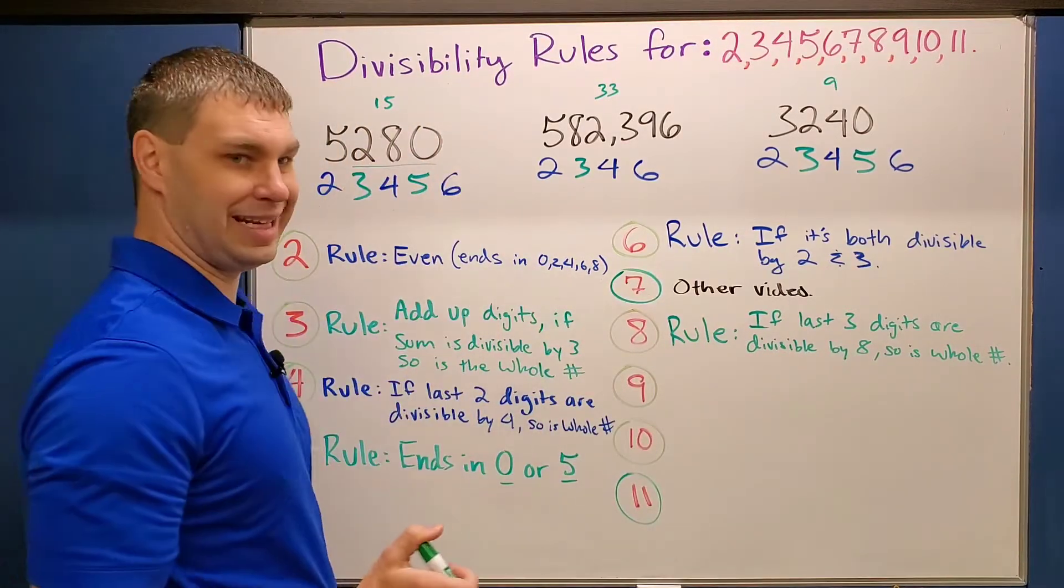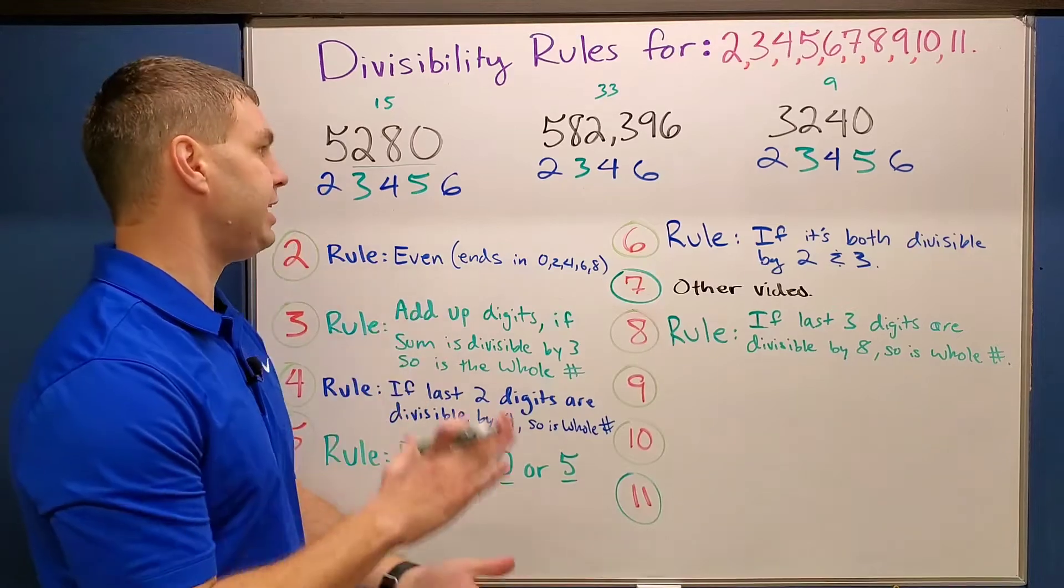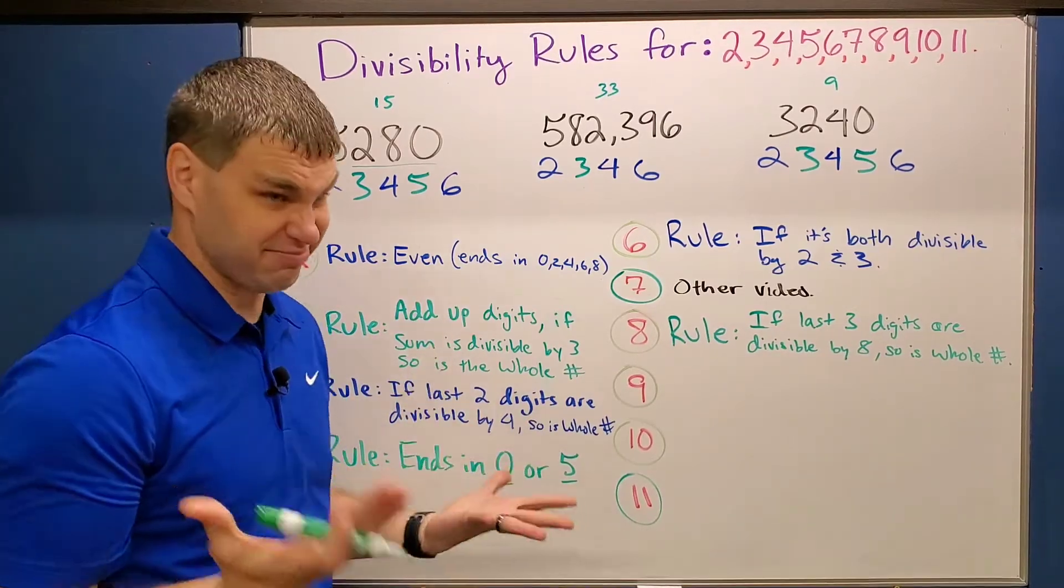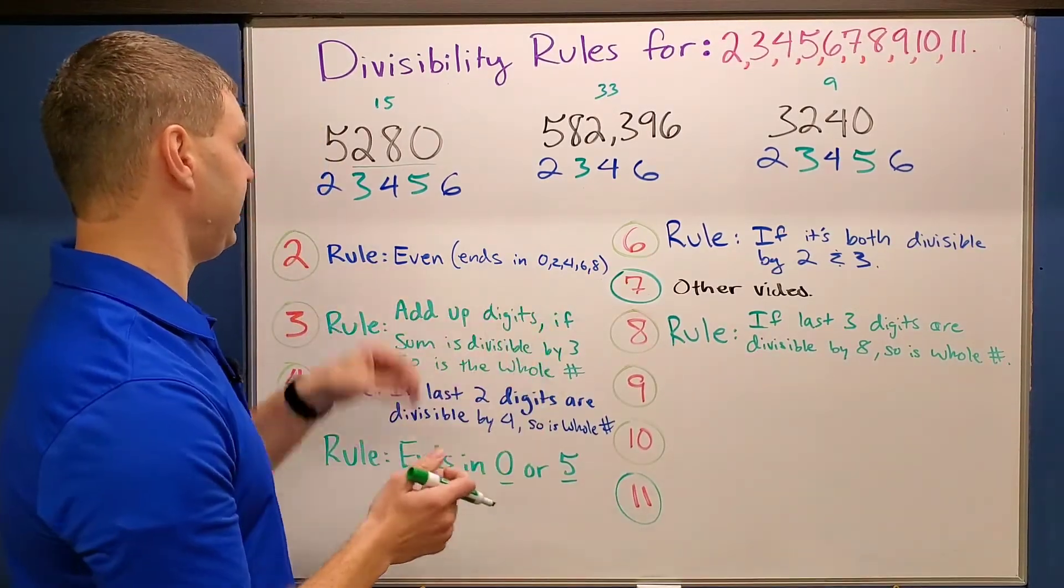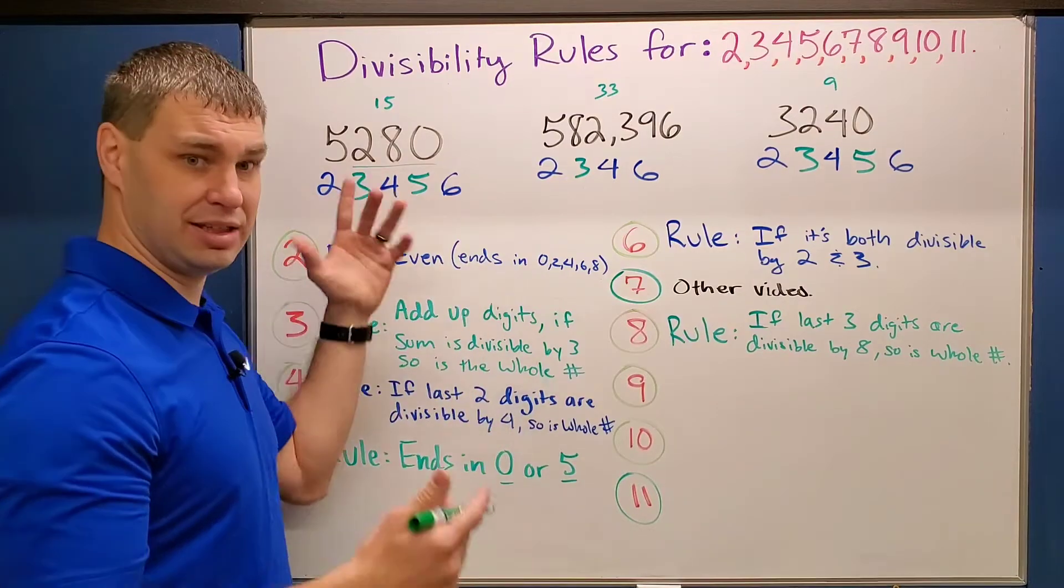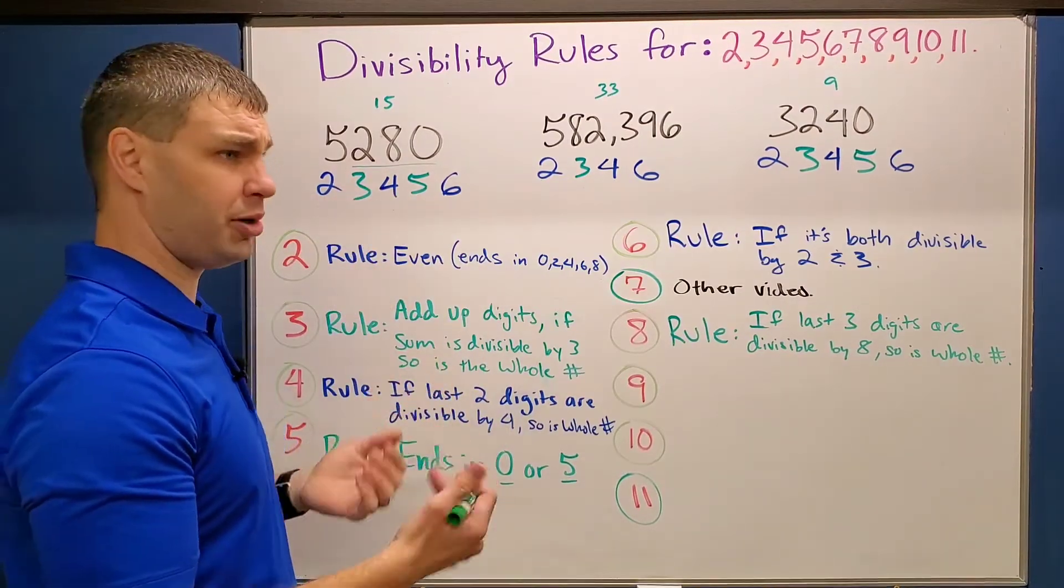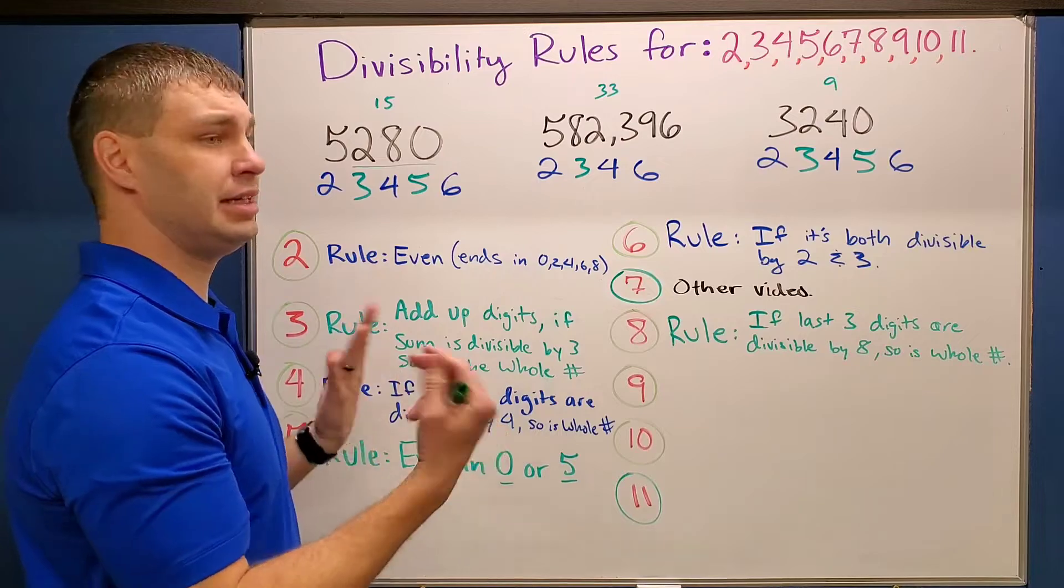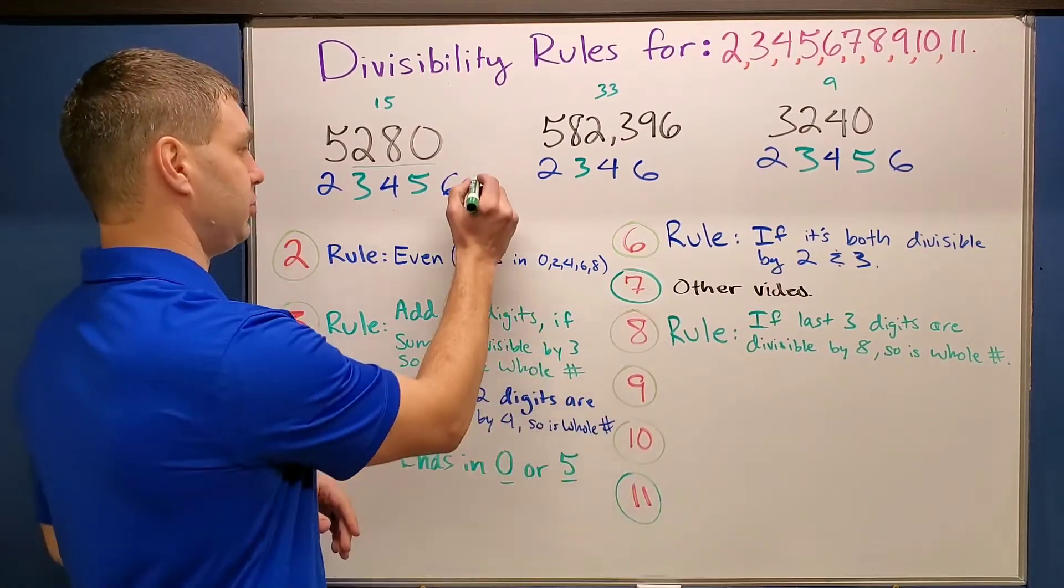So if we look at our first number here, the last three digits are 280. And if I think of 280, is that divisible by eight? Well, I don't really know. I have to do some mental math here. I know eight can go into 28 three times. That'd be 24, and that'll leave you with 40 left over. Yes, 40 is divisible by eight, so I think this would work.